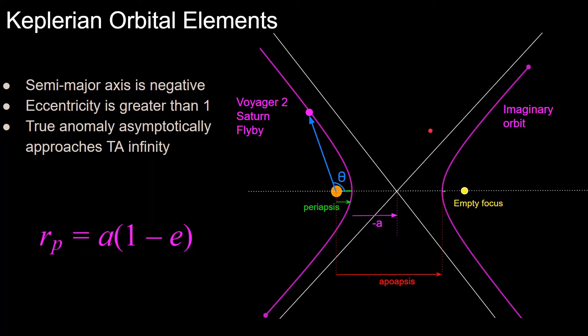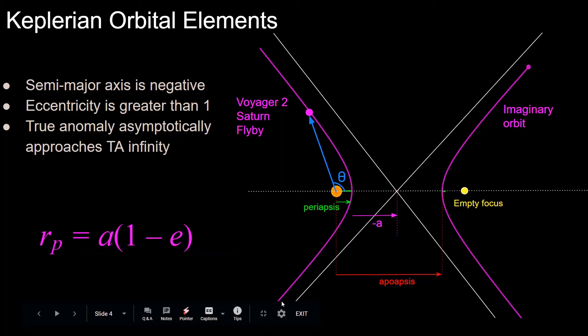Next is eccentricity, which is greater than 1 for hyperbolic orbits, and note that for circular orbits, it's 0, for elliptical orbits, it's between 0 and 1, and for hyperbolic orbits, it's greater than 1. And the higher the eccentricity, basically, the skinnier that this trajectory will be.